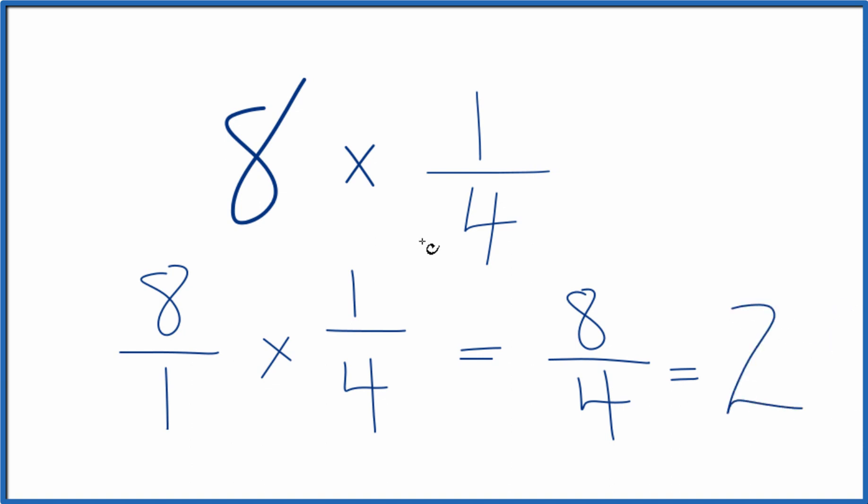So that's it. When you multiply eight times 1 fourth, you end up with eight fourths, or you could just call that two. This is Dr. B.